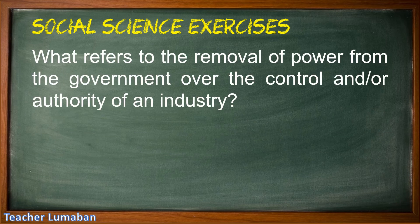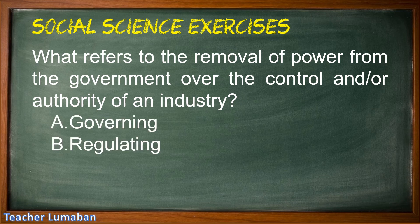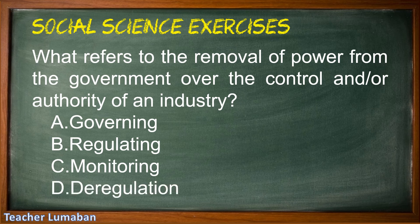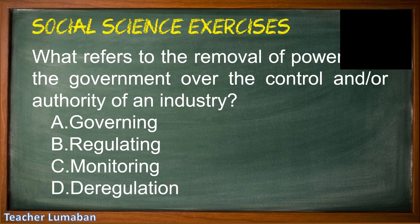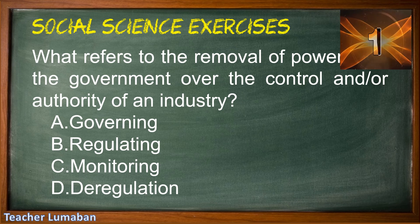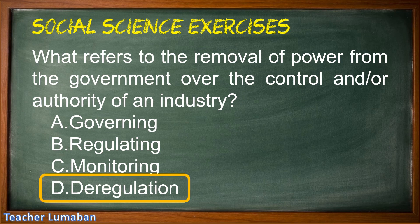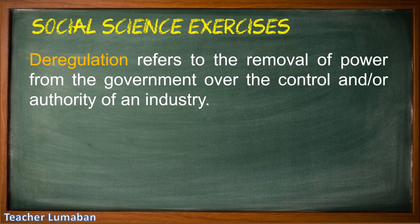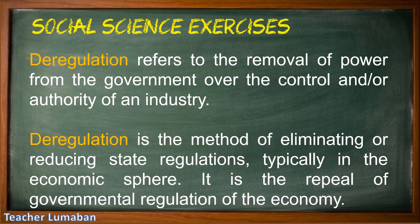What refers to the removal of power from the government over the control or authority of an industry? Letter A governing, Letter B regulating, Letter C monitoring, Letter D deregulation. The correct answer is Letter D, deregulation. Deregulation refers to the removal of power from the government over the control or authority of an industry. It is the method of eliminating or reducing state regulations, typically in the economic sphere — the repeal of governmental regulation of the economy.